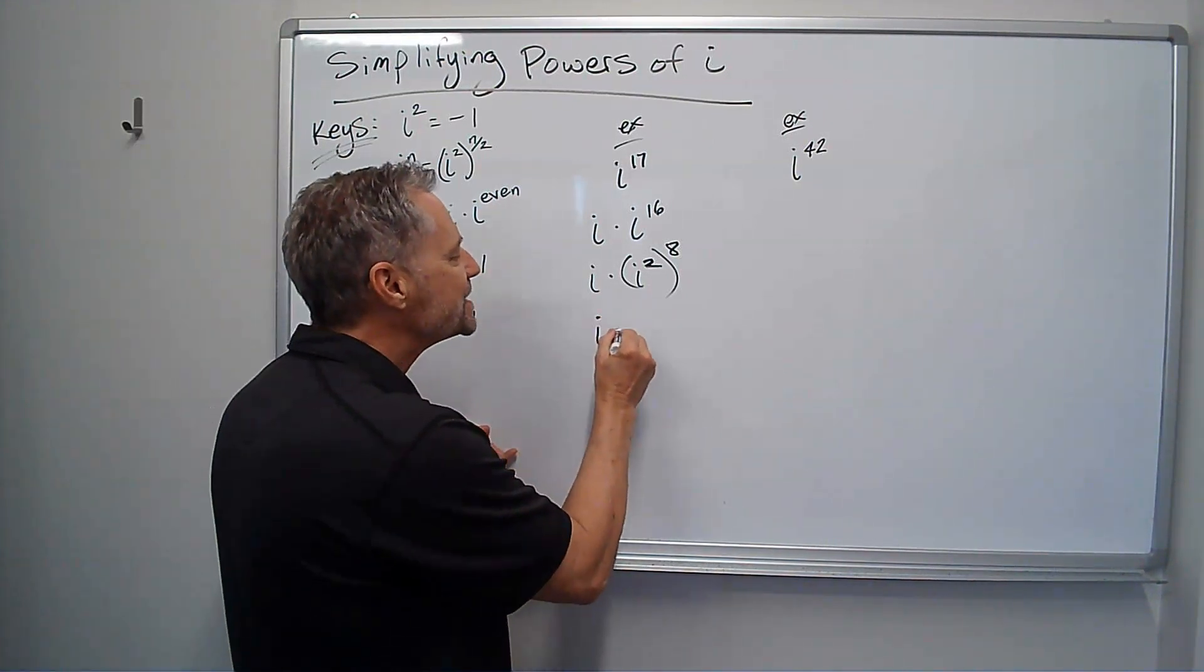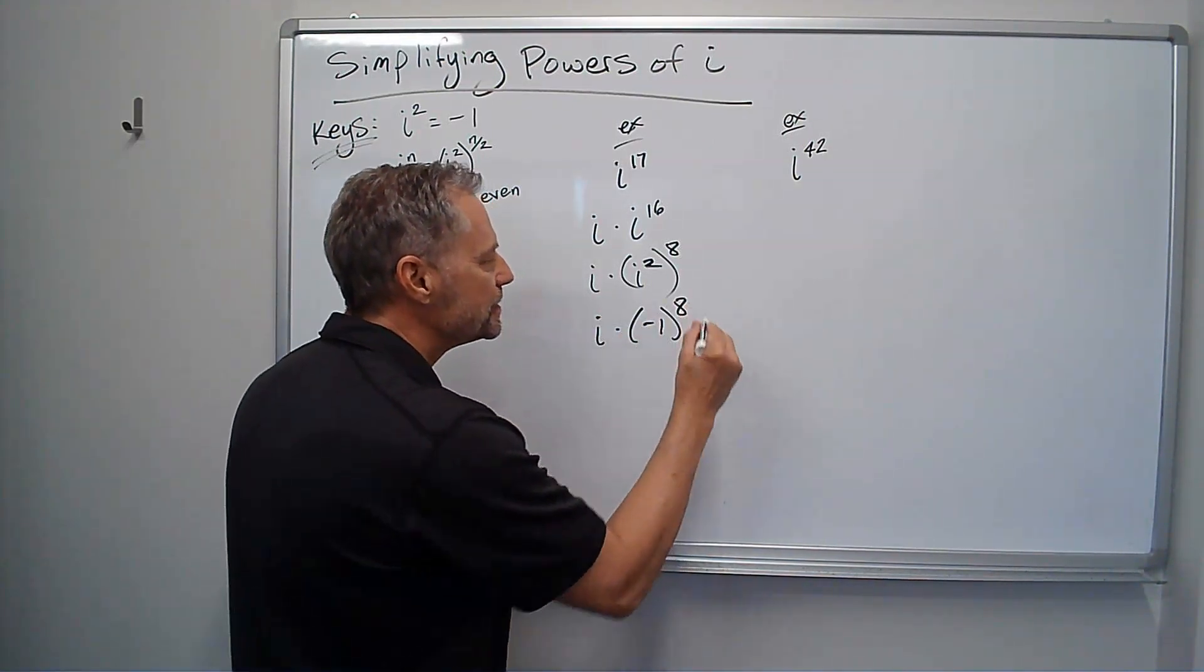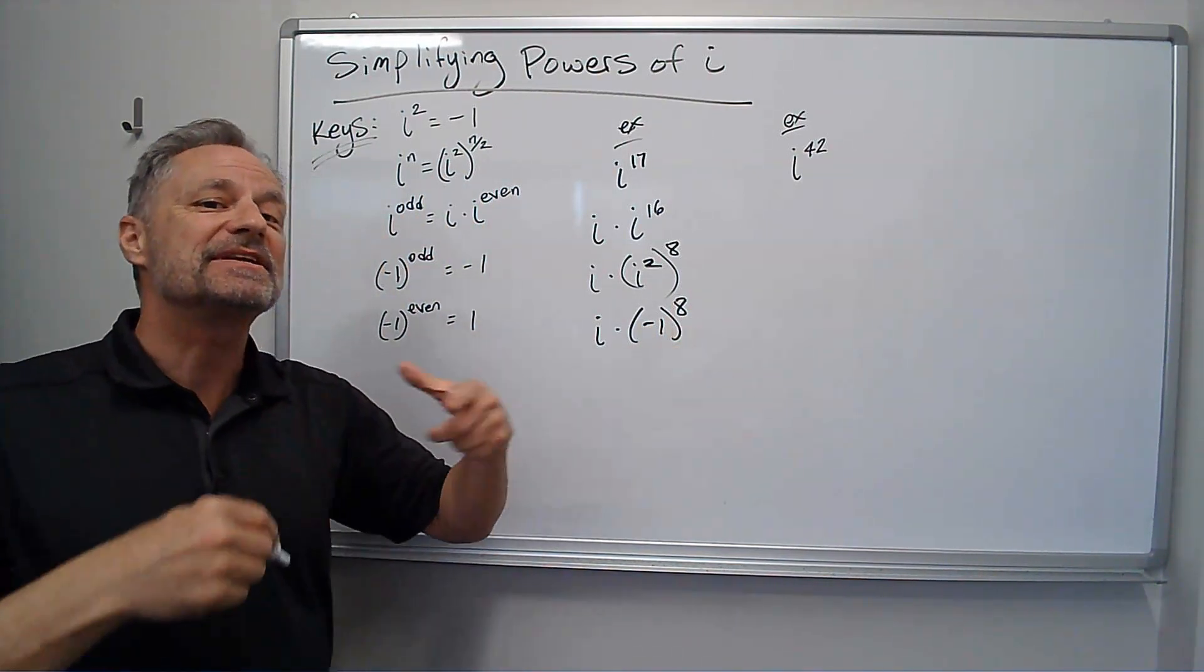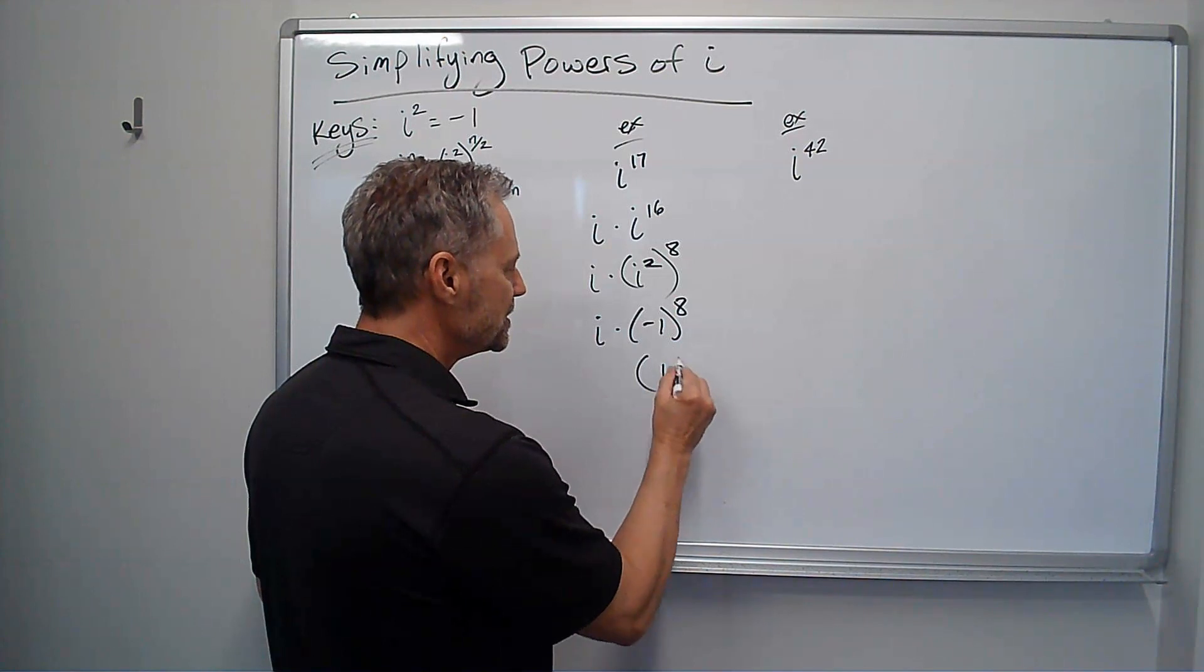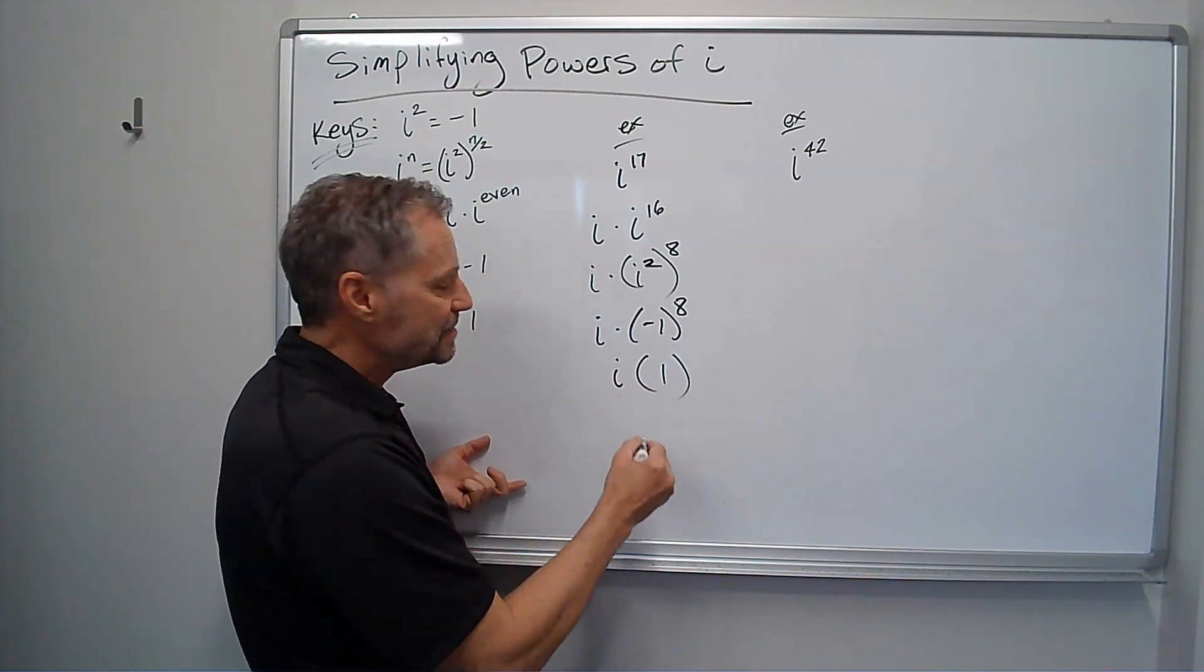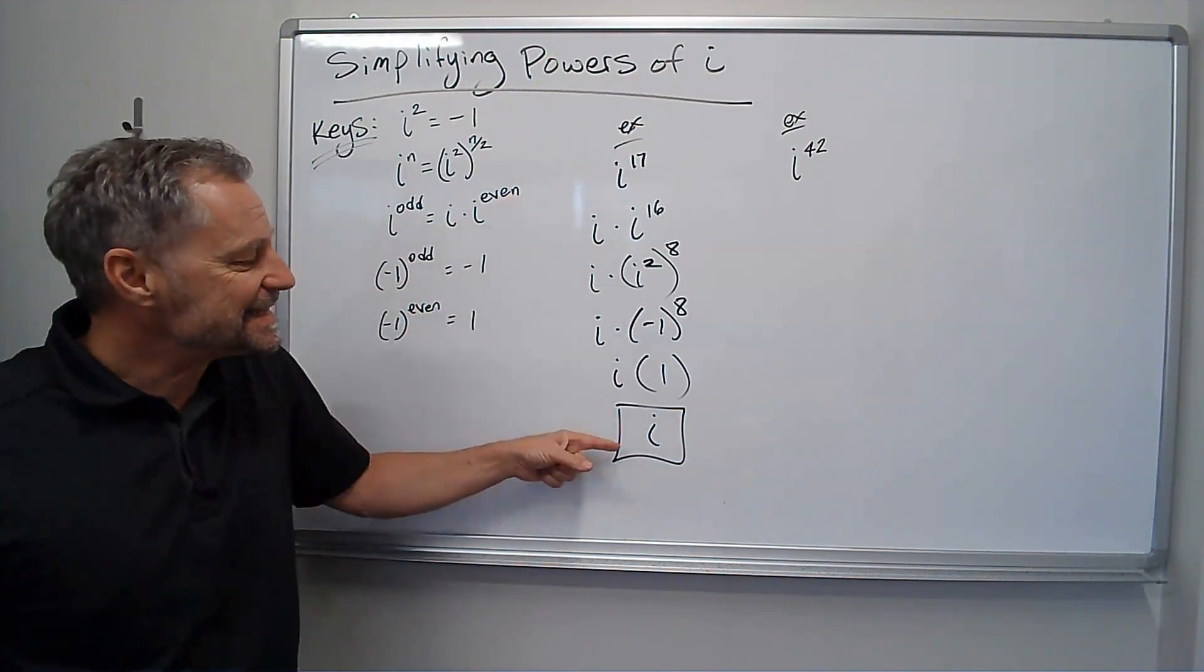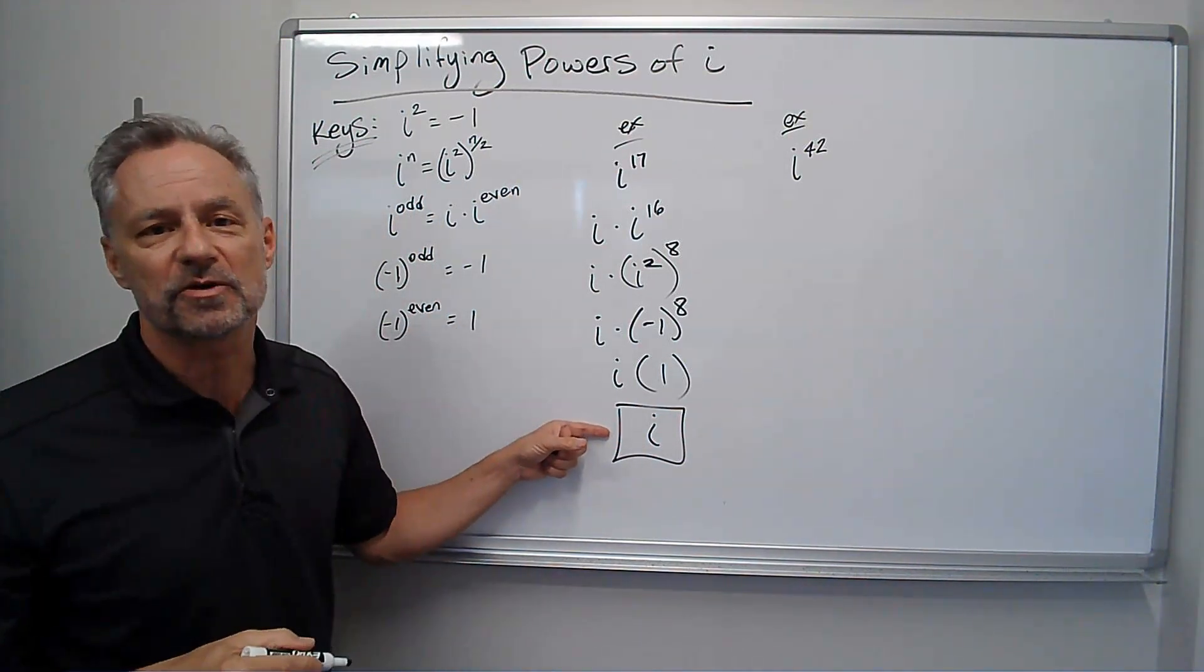I know negative 1 to the eighth power, since that's even is positive 1, because those cancel out in pairs. So I have i times 1, which is just i. And that's my answer. i to the 17th is actually the same thing as i to the first power.